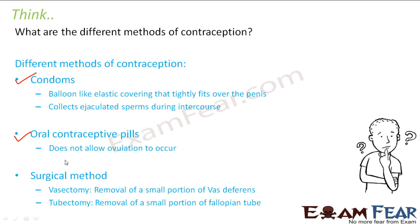There are surgical methods as well. In males, a small portion of the vas deferens is removed so that the path of the vas deferens is blocked. Similarly, in females, a small portion of the fallopian tube is removed so that the sperm cannot go and meet the egg — the egg and the sperm can never meet, there will be no fertilization and no pregnancy.